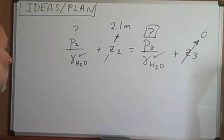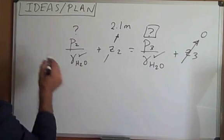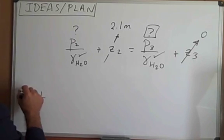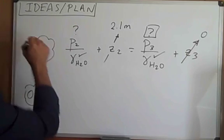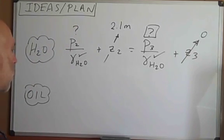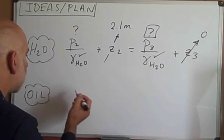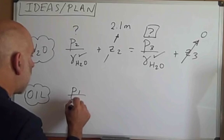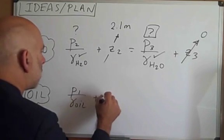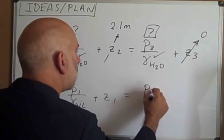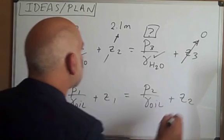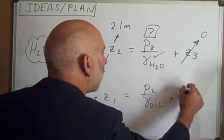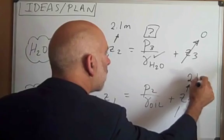The next thing we're going to do is write the hydrostatic equation for the oil. So, this is the hydrostatic equation for the water. Now, let's write the hydrostatic equation for the oil. So, the hydrostatic equation for the oil is P1 over gamma oil plus Z1 equals P2 over gamma oil plus Z2. Z2 is 2.1 meters.